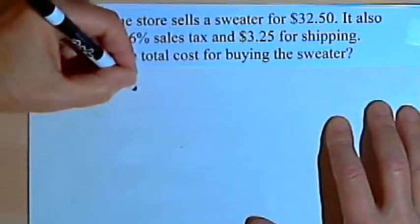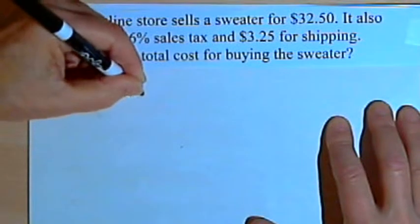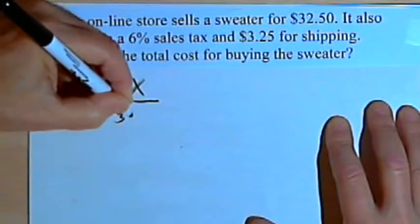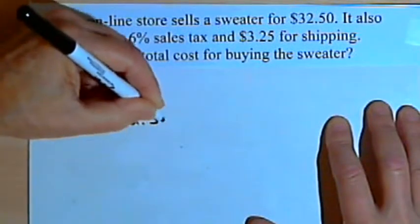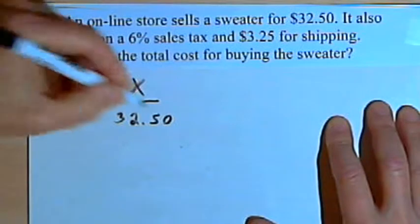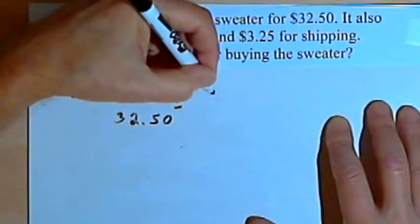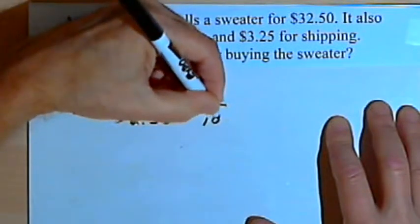We're looking for the sales tax, that's going to be our x, and we're going to make that the numerator of a fraction, the denominator will be the cost of the sweater. And we'll set that equal to 6% written as a fraction, or 6 over 100.